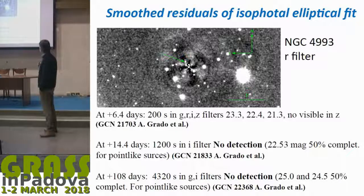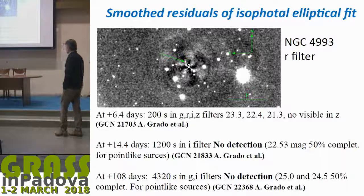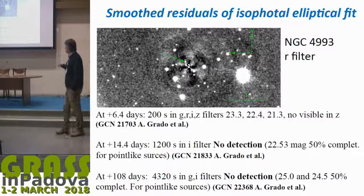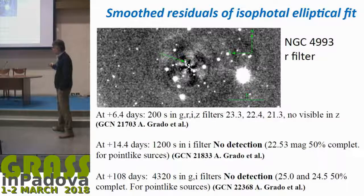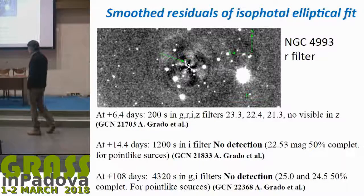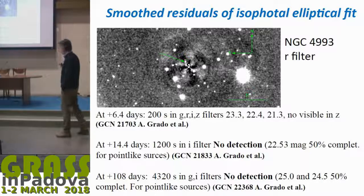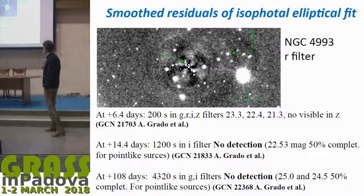After 6.4 days we imaged again, and then again after two weeks when the kilonova was no longer observable. We did observations again in January when the target was visible again, trying to do very deep observations, but it was not deep enough to detect anything.